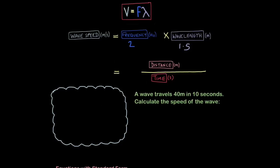So 40 meters in 10 seconds. That is time, obviously. So what we're doing here is 40 divided by 10. So if you divide 40 by 10, you will get 4 meters per second.